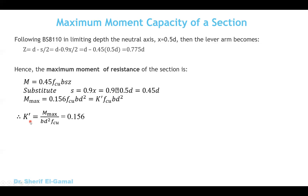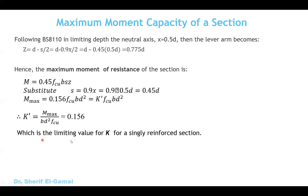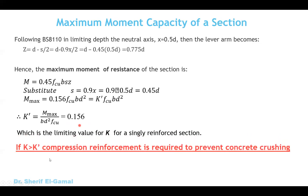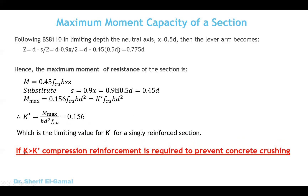This k dash is a limiting factor. By checking the calculated k against k dash, we determine if the section will be singly or doubly reinforced. The limiting value of k for a singly reinforced rectangular section is k dash equals 0.156. If the calculated k equals m over Fccu bd squared is greater than 0.156, compression reinforcement will be required to prevent concrete crushing. If k is less than 0.156, no compression steel is required and we design it as a singly reinforced rectangular section.